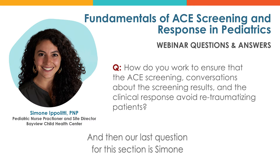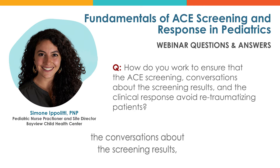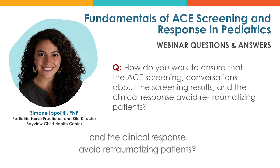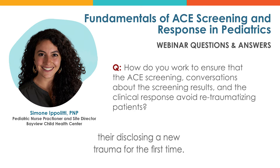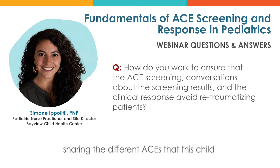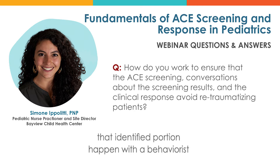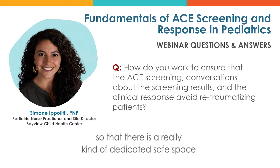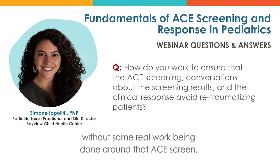How do you ensure that the ACE screening itself, conversations about the results, and the clinical response avoid re-traumatizing patients? We typically use the de-identified screen so that families don't feel like they're disclosing a new trauma for the first time. We try to have the identified portion happen with the behaviorist so there is a dedicated and safe space to process any re-traumatization that may occur in the moment, ensuring we're not sending that family out the door without some real work being done around that ACE screen.